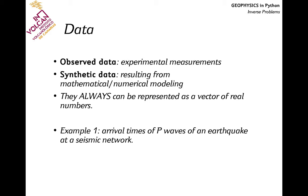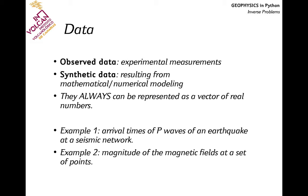When you have an earthquake, seismic waves radiate from the hypocenter and reach the seismic stations deployed at the surface of the earth. Picking the arrival time of seismic waves, which can be P or S waves, allows you to locate the earthquake. Earthquake location is one of the most important geophysical inverse problems. Another example of data is the magnitude of the magnetic field measured at the surface of the earth, which is used in geophysical prospecting — searching for ores or subsurface geological structures. Measuring the magnitude of the magnetic field allows you to infer relevant geological structures in the subsoil.